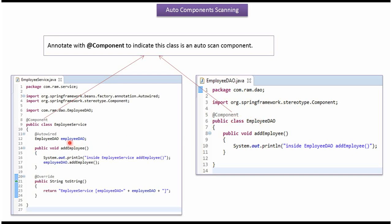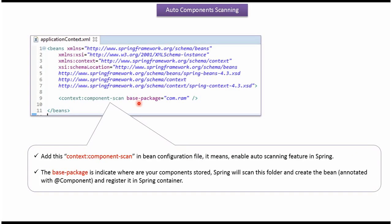And in the EmployeeDao property, I have applied the @Autowired annotation. So the EmployeeDao object will be created by the Spring container and automatically injected into this property. This is a Spring configuration file. The Spring container reads this configuration file and scans this package. If any class is annotated with the @Component annotation, then it will create a bean for that class and register it in the Spring container.